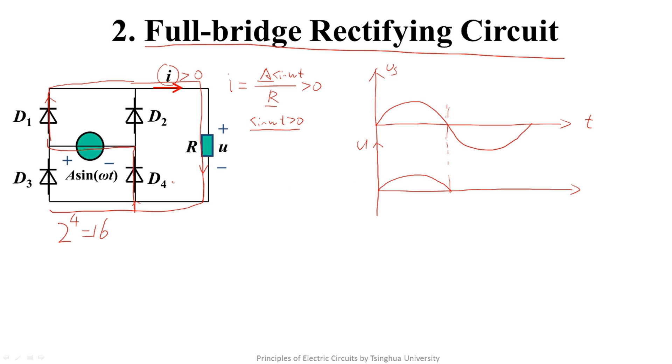Then we analyze another situation. Just now, the assumption was that the positive current flows through D1 and so D4 has a positive current. Now we suppose that there is a positive current flowing through D2.